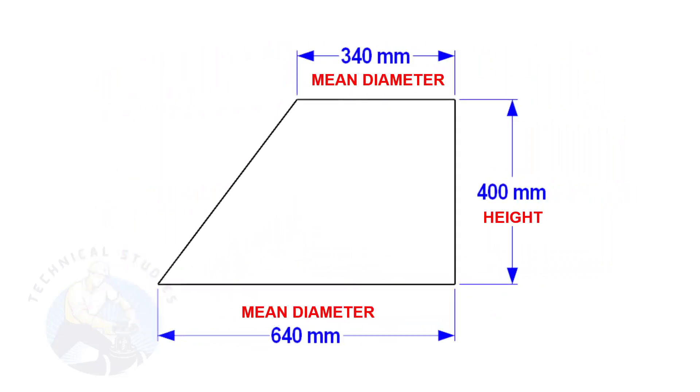In this layout, the bottom and top mean diameters are 640 mm and 340 mm respectively, and the height is 400 mm.